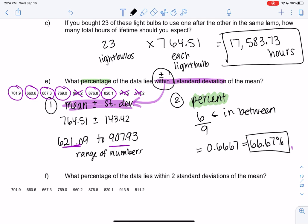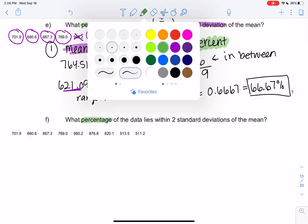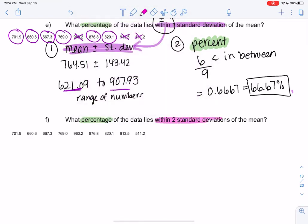Cool, so let's do the same thing with two standard deviations. It's the same question, so we're going to find the percentage second and we're going to find the range for two standard deviations first. So the difference here is we're going to take the mean, we're going to add and subtract for the word within, but we're going to multiply the standard deviation by 2. So 764.51 plus or minus 2 times 143.42.